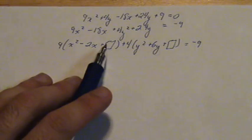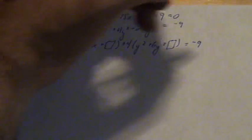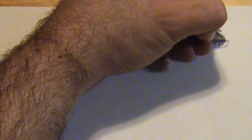Now you will notice, this box is inside these parentheses where it will be multiplied by that 9. So over here we are going to write plus 9 box.